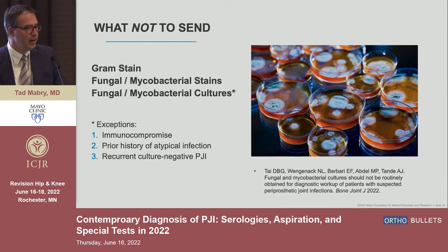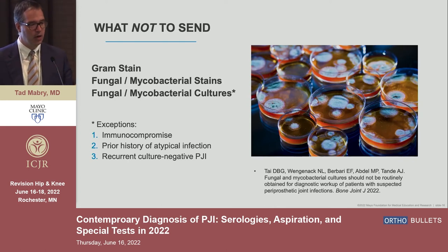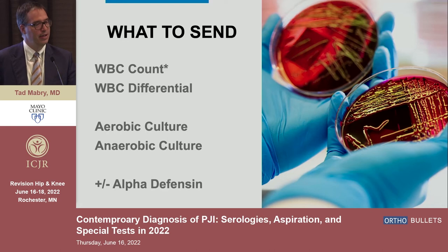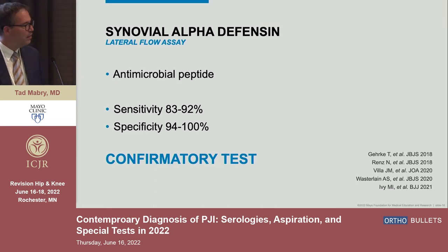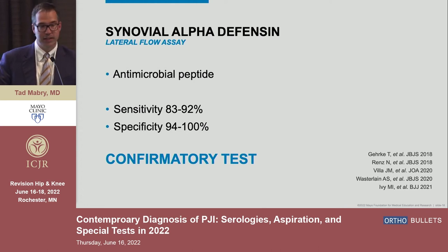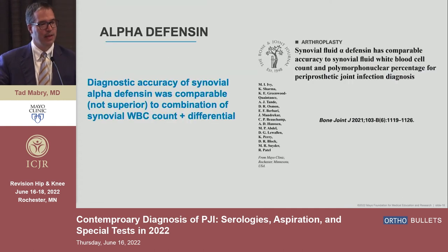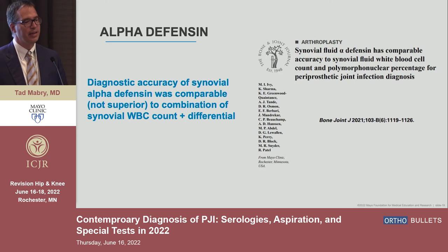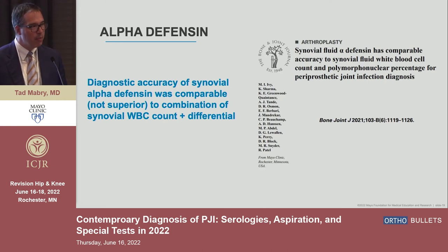What not to send: gram stain, fungal and mycobacterial stains, and routine fungal and mycobacterial cultures are not terribly helpful — exceptions being immunocompromised patients, prior history of atypical infection, or recurrent culture-negative PJI. What you should send: white count, differential, aerobic and anaerobic cultures, plus or minus alpha-defensin. Alpha-defensin is an antimicrobial peptide produced by neutrophils, and it is most powerful as a confirmatory test — when positive, that should get your attention more than if it's negative. A recent study from our institution found alpha-defensin, both lateral flow and ELISA, to be comparable but not superior to the combination of synovial white count and differential.